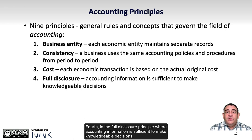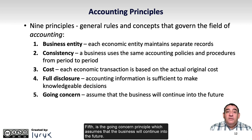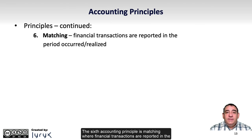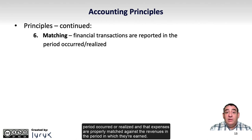Fourth is the Full Disclosure Principle, where accounting information is sufficient to make knowledgeable decisions. Fifth is the Going Concern Principle, which assumes that the business will continue into the future. The sixth accounting principle is Matching, where financial transactions are reported in the period occurred or realized, and expenses are properly matched against the revenues in the period in which they are earned.